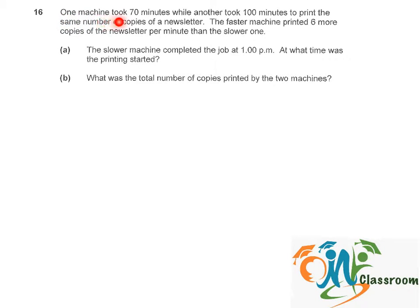One machine took 70 minutes while another took 100 minutes to print the same number of copies of a newsletter. The faster machine printed 6 more copies of the newsletter each minute than the slow one. The slower machine completed the job at 1pm.